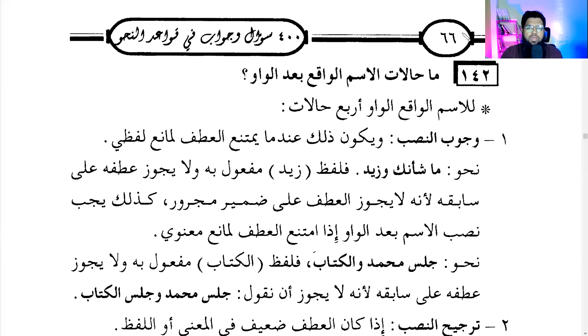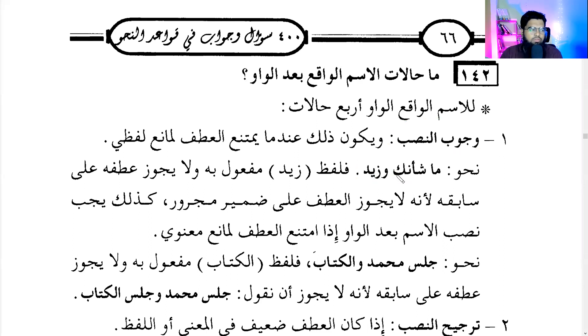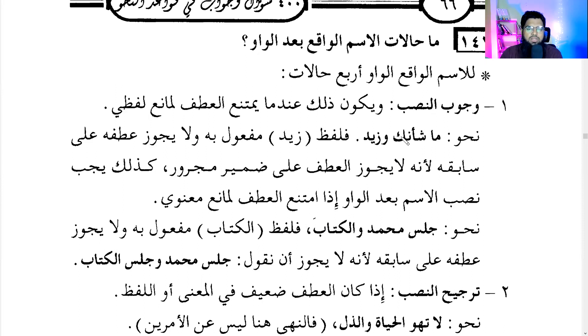It cannot be Zaidun here, it has to be Zaidan, because you cannot do atf to a dhamir — generally speaking, you cannot give atf to a pronoun. You cannot say 'what is your matter and Zaid,' you have to bring Anta wa Zaid separately. Like Allah says: 'Uskun anta wa qawmuka' and 'Uskun anta wa zawjuka' — you and your wife live.